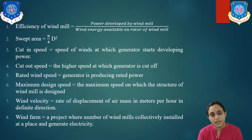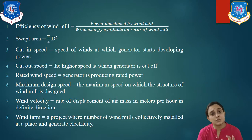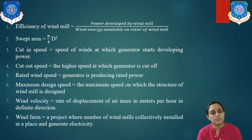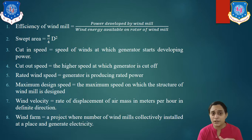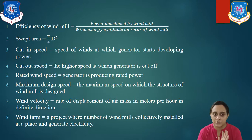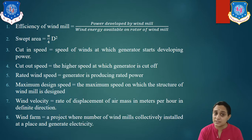Cut-out speed: when the speed of the wind is very high and dangerous for the wind turbine, the generator must be isolated from its operation. The wind will rotate but the generator will not produce any electricity. This is known as cut-out speed, and it is as necessary as cut-in speed.